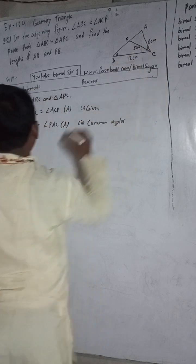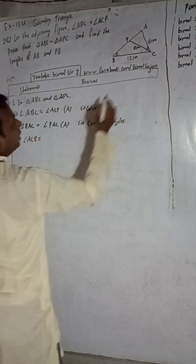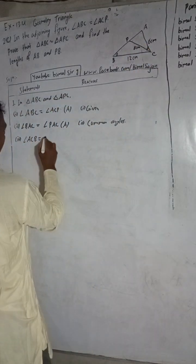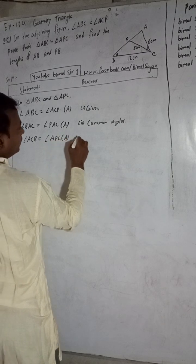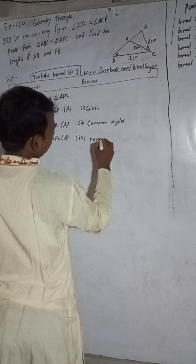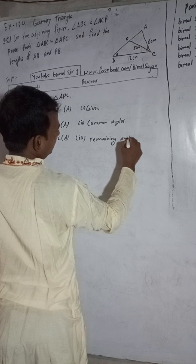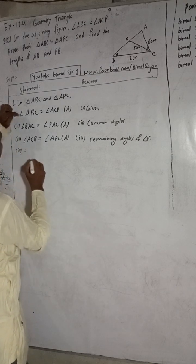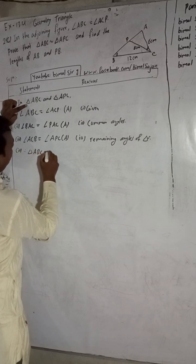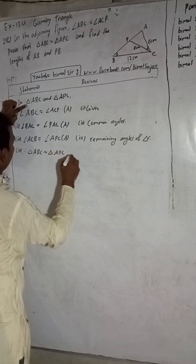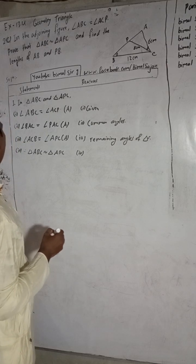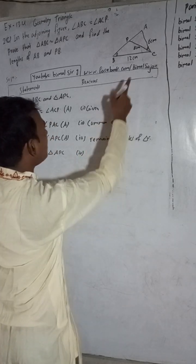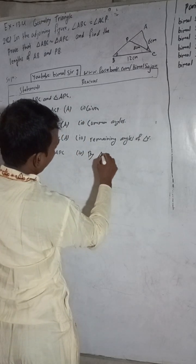Angle ACB. We want to answer our question: this angle corresponds in the triangle — which angle remains? So this angle means angle AQC. Remaining angles of triangle. Therefore, triangle ABC is similar to triangle AQC, by AAA (Angle-Angle-Angle).